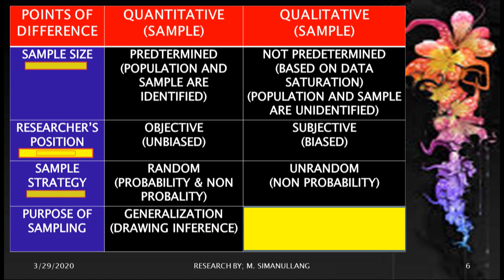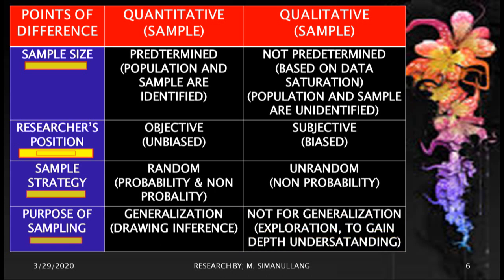The purpose of sampling in quantitative research is for generalization or drawing inference — meaning the sample represents the population. While for qualitative research it is not for generalization; the purpose is for exploration or to gain depth understanding of a topic, phenomenon, and so forth.